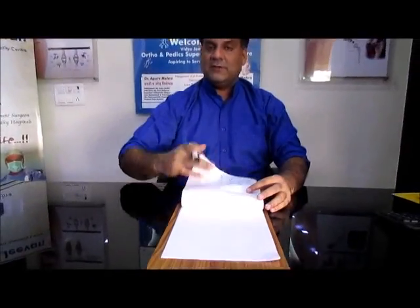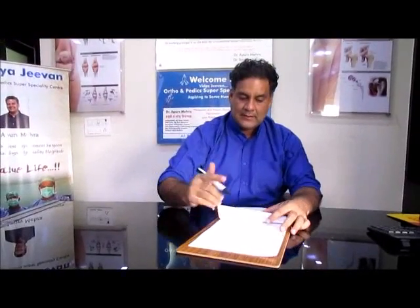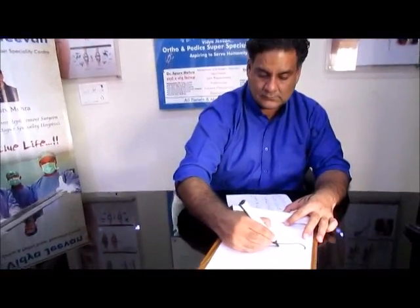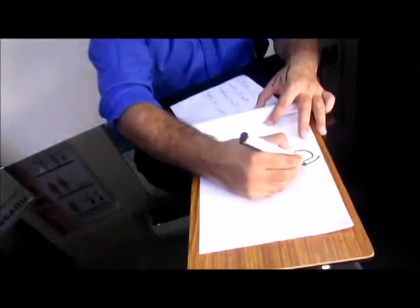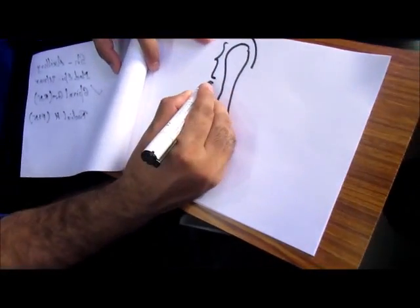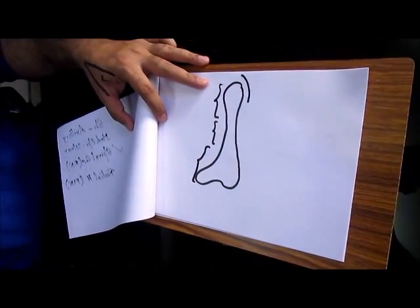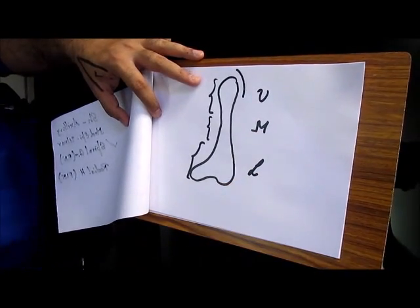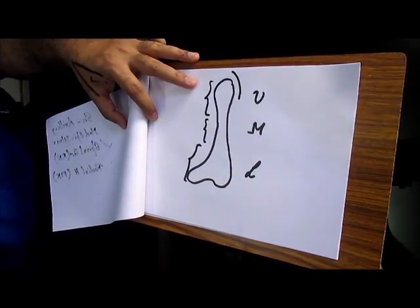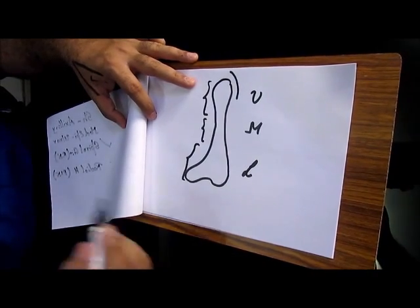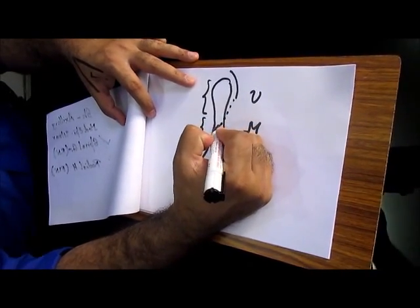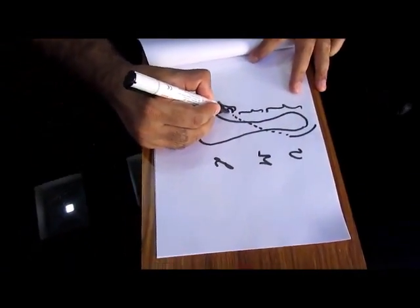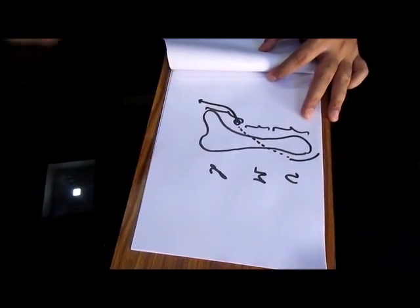Coming again to the Radial Nerve question which came in May AIIMS. If you have a Fracture of Humerus. If this is upper one-third, middle one-third and lower one-third. At which level will the Radial Nerve be paralyzed? This is how the Radial Nerve travels. Into the groove in the middle one-third. Comes from the Posterior Compartment. Pierces the Lateral Intermuscular Septum. And comes on the lateral side.